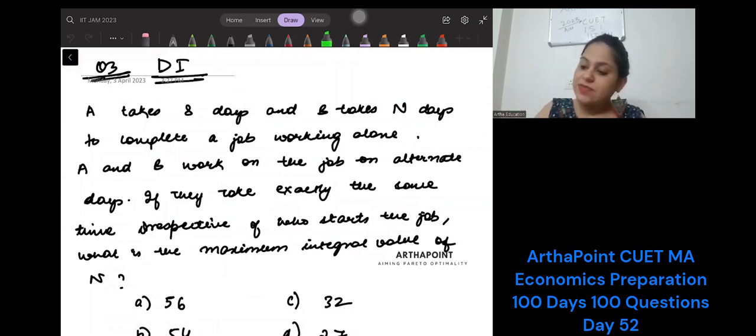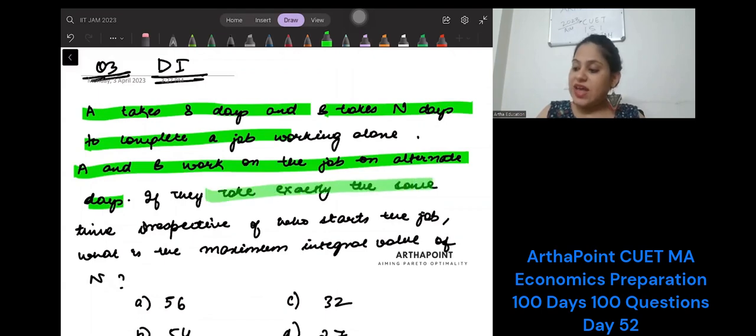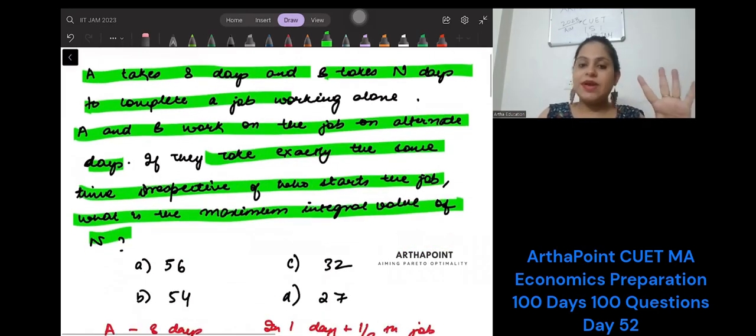It says A takes 8 days and B takes N days to complete a job when working alone. A and B work on the job on alternate days. If they take exactly the same time irrespective of who starts the job, what is the maximum integral value of N? Try to do it yourself first, then we will do it together.